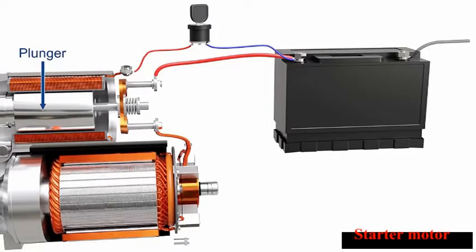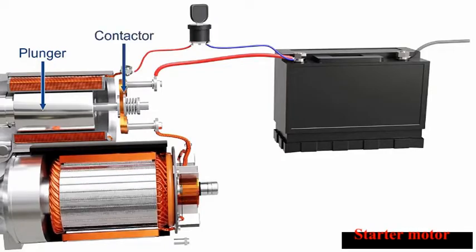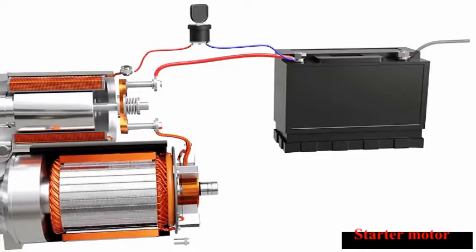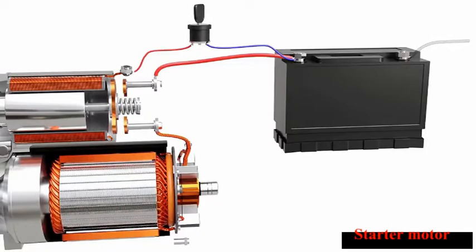The plunger connects two copper terminals of a contactor switch. This completes the circuit from the battery to the motor and causes the rotor to spin. When the solenoid is de-energized, the core returns back and disconnects the motor from the battery.